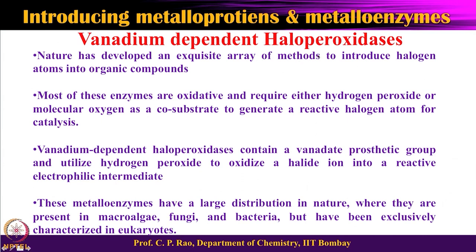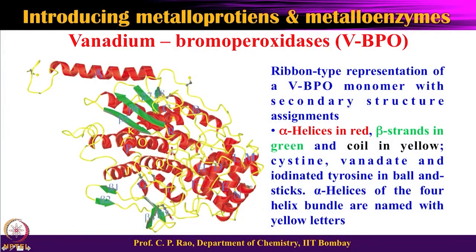These haloperoxidases work in the presence of halogen, which is required, along with a halide. Let us look at one example — vanadium bromoperoxidase. This is a huge protein, and the structure shows alpha helices in red, beta sheets in green, and random coils in yellow. Together these form the three-dimensional structure responsible for the enzyme's activity.